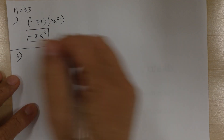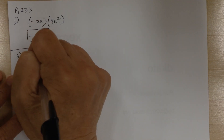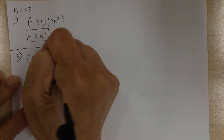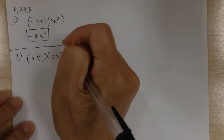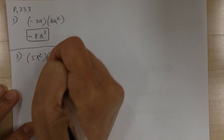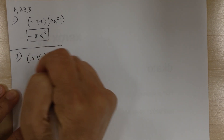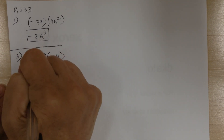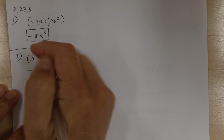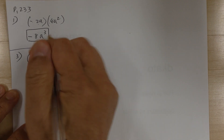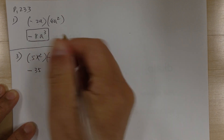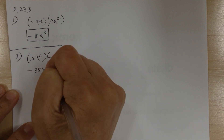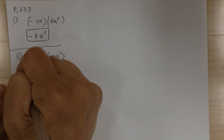Number 3. You have 5x squared times negative 7y. Positive times negative is negative — do the sign first. Then the number: 5 times 7 is 35. And you do the alphabet, so you get x squared and y.